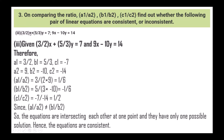Next: (3/2)x + (5/3)y = 7 and 9x - 10y = 14. So a1 = 3/2, b1 = 5/3, c1 = -7, a2 = 9, b2 = -10, c2 = -14. a1/a2 = (3/2)/9 = 1/6, b1/b2 = (5/3)/(-10) = -1/6, and c1/c2 = -7/-14 = 1/2. Since a1/a2 ≠ b1/b2, the equations intersect each other at one point and have only one possible solution. Hence the equations are consistent.